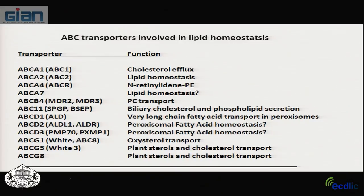ABC transporters play an important role in lipid and cholesterol homeostasis that is often overlooked. ABCA1 mediates cholesterol efflux; ABCA2 is involved in lipid homeostasis; ABCA4 is retina-specific and transports retinol and phosphatidylethanolamine. ABCA7, ABCB4, and ABCB11 are involved in phosphatidylcholine and biliary cholesterol/phospholipid transport. ABCD1 handles long-chain fatty acids in peroxisomes. Many researchers are now focusing on these transporters in the context of cardiovascular disease.